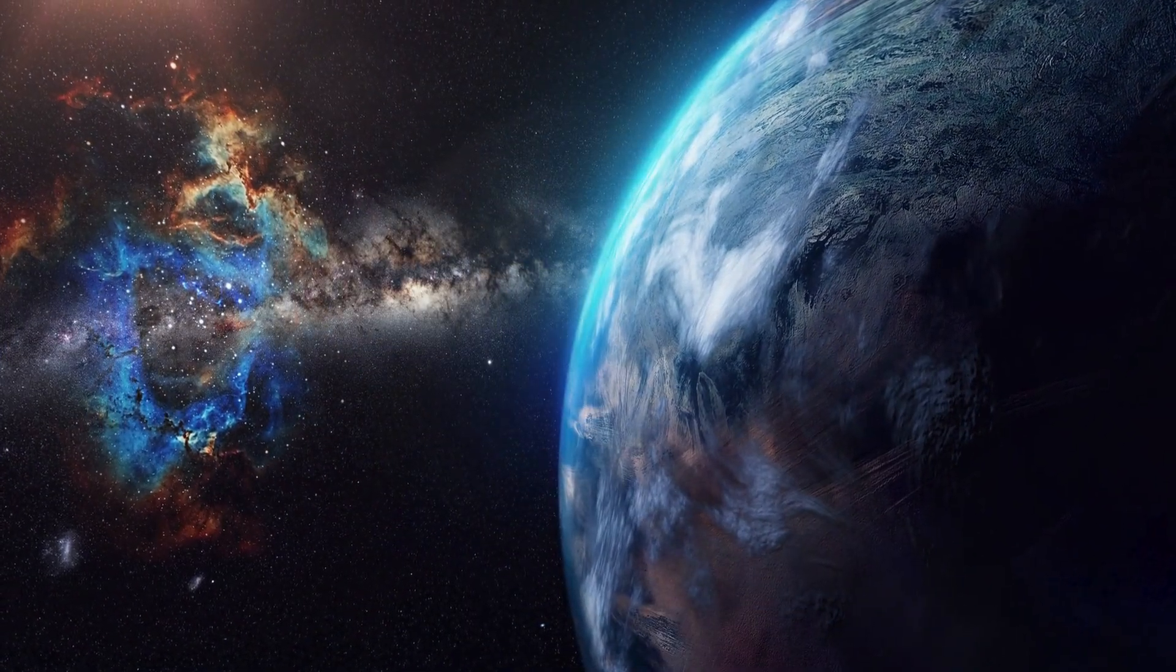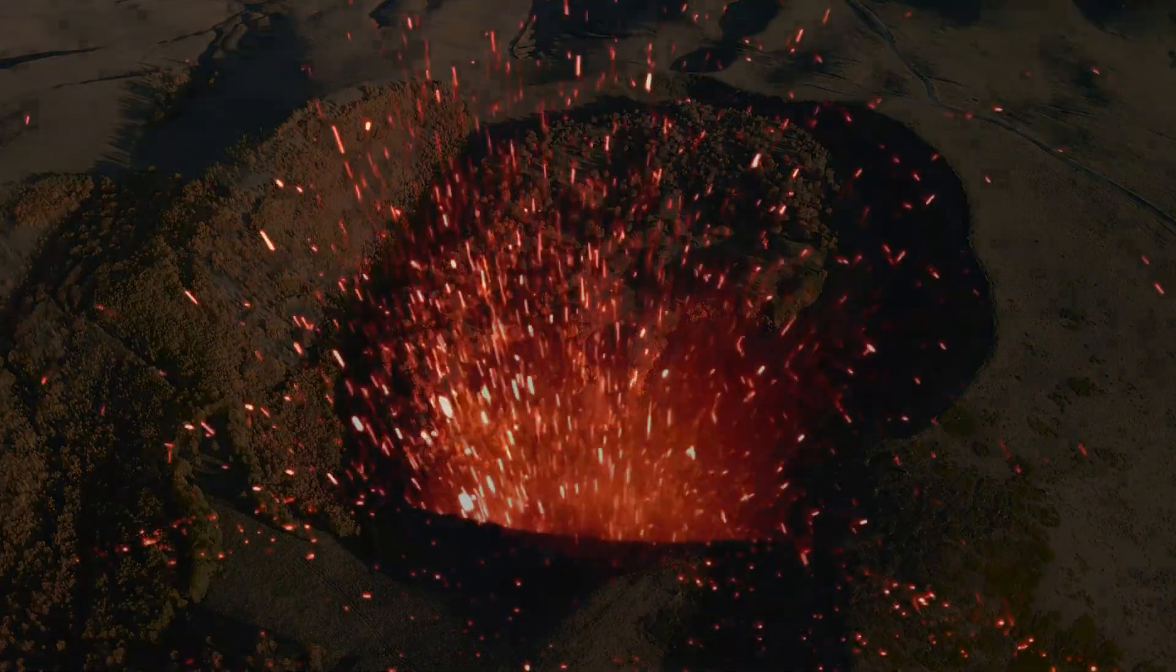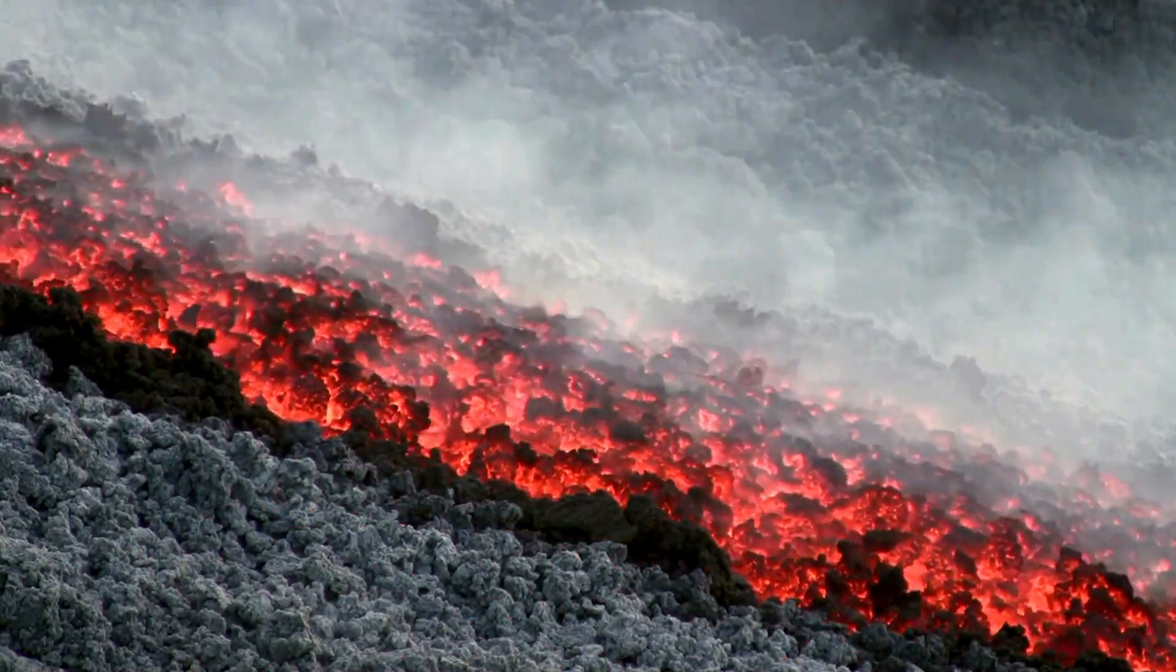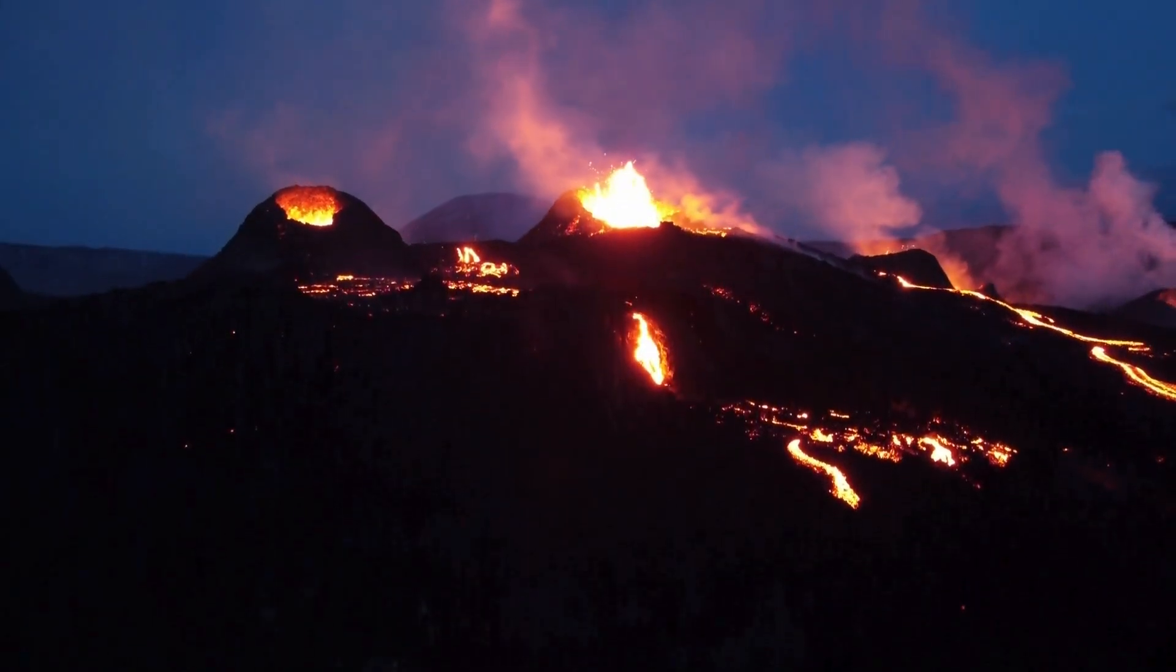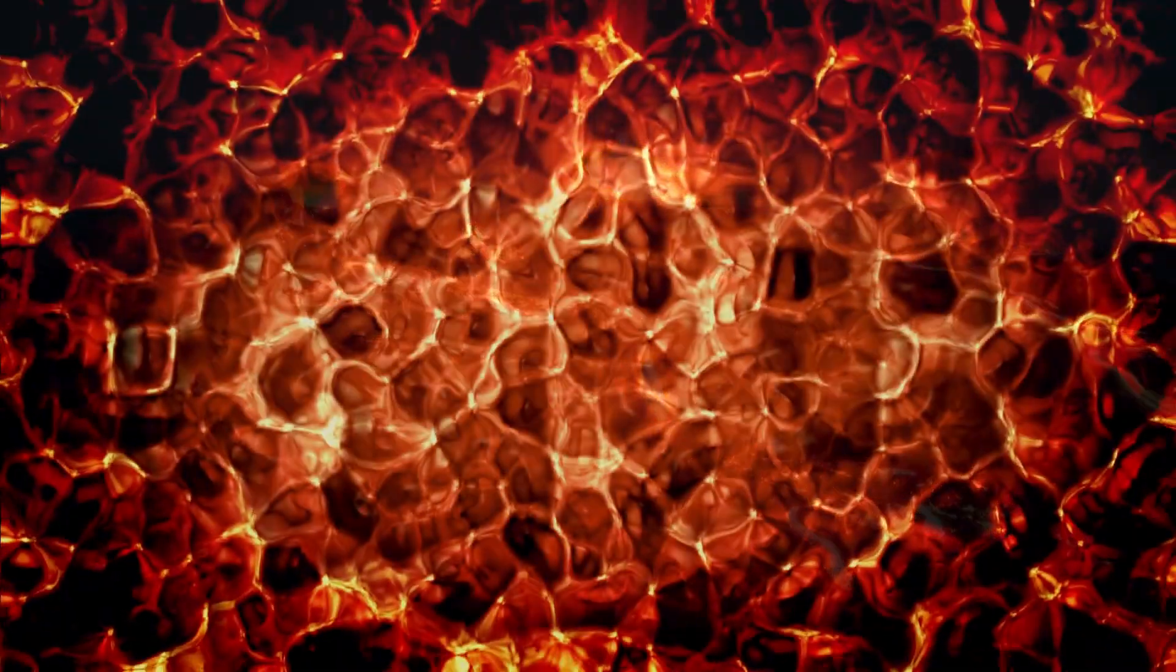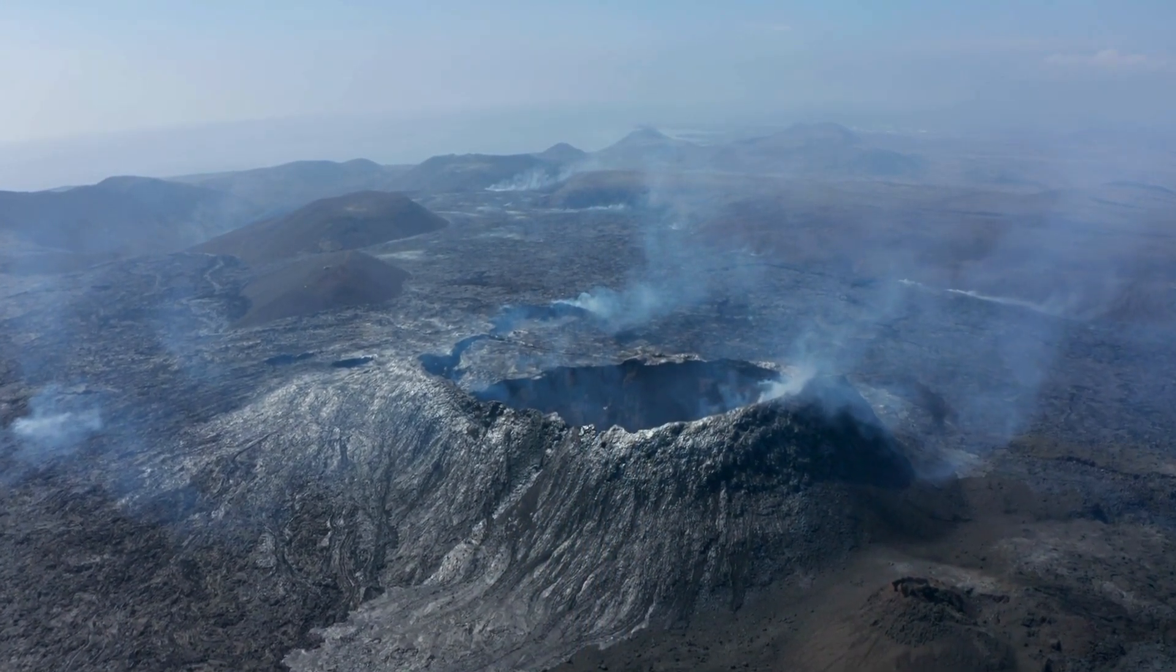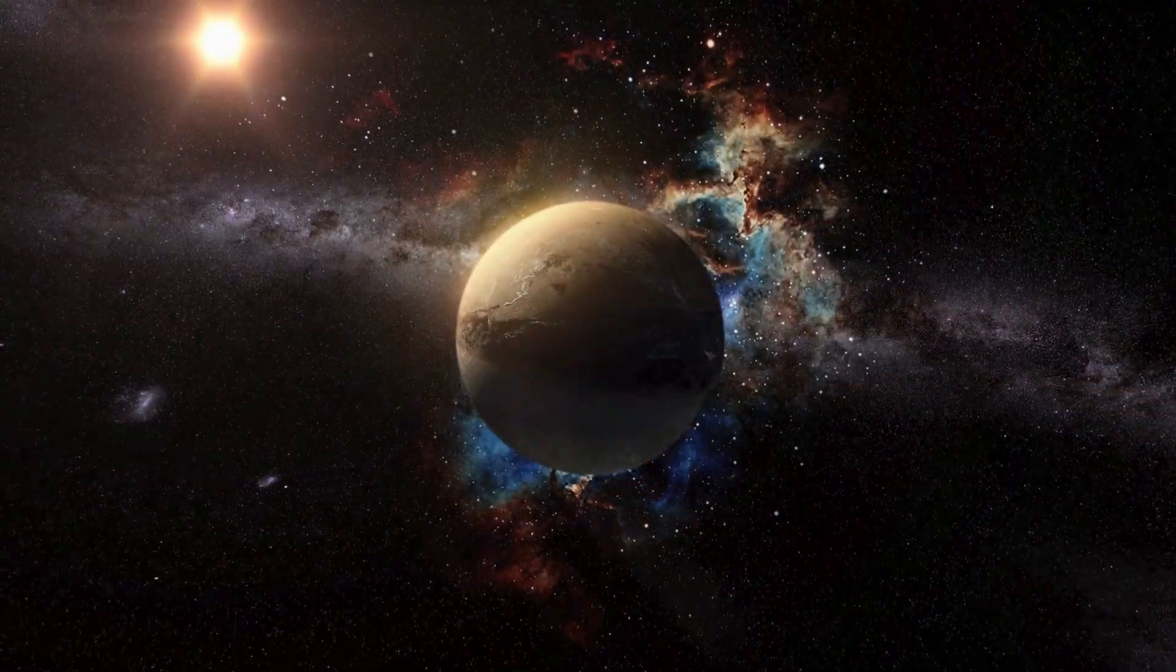Volcanic gases, though deadly, play a pivotal role in mineral formation. Sulfur dioxide, emitted in vast quantities, reacts with oxygen and water to form sulfuric acid, which interacts with rocks to produce minerals like gypsum or native sulfur. Volcanic ash, often dismissed as a nuisance, is a geological powerhouse, composed of fine shards of volcanic glass and minerals like quartz, feldspar, and zeolites. Over time, ash enhances soil texture, boosts water retention, and fosters plant growth, transforming barren landscapes into fertile grounds.